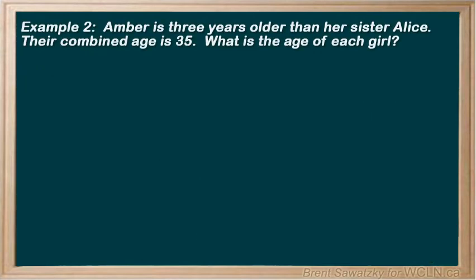Example 2. Amber is 3 years older than her sister Alice. Their combined age is 35. What is the age of each girl? Our first step: Read it carefully and make some notes. We have Amber and Alice sisters. And Amber is older by 3 years. And their combined age is 35.